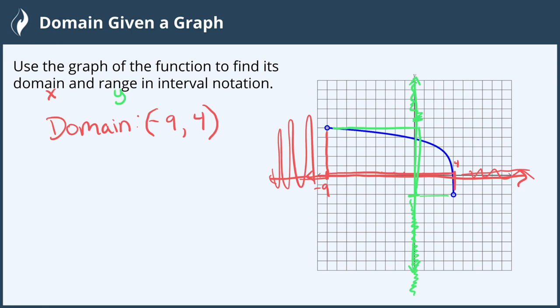So from bottom to top, this is negative 2 going up to positive 5. So our range from lowest to highest goes from negative 2 to positive 5.